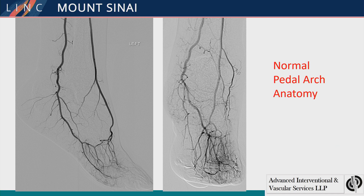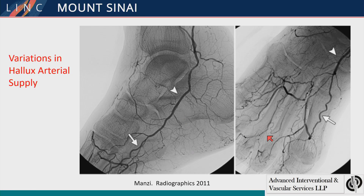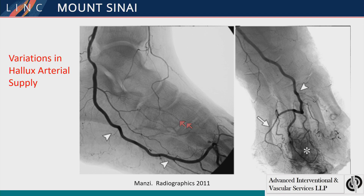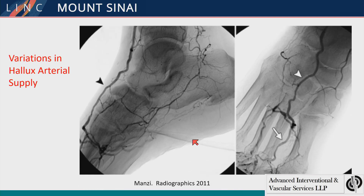Moving to the foot, here's normal pedal arch anatomy. Everyone recognizes the superficial plantar pedal loop and the deep arch. The lateral plantar is over here, and the medial plantar is here. Here are variations particularly in supply to the great toe: one case where the medial plantar predominantly supplies the hallux; another case where it's predominantly the lateral plantar supplying the hallux; and a case where the dorsalis pedis supplies the hallux.